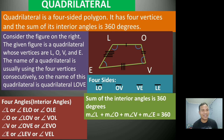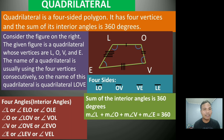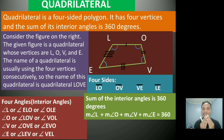Let us consider the figure on the right. The given figure is a quadrilateral whose vertices are L, O, V, and E. The name of a quadrilateral is usually written using the four vertices consecutively. So the name of this quadrilateral is quadrilateral LOVE, or it could be OVEL, VELO, or ELOV — as long as the vertices are written consecutively, that could be the name of the given quadrilateral.